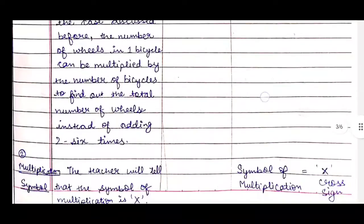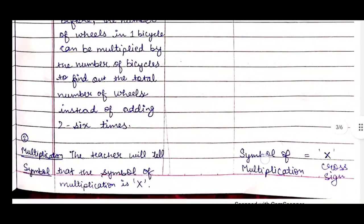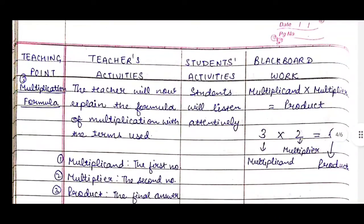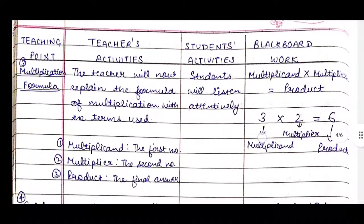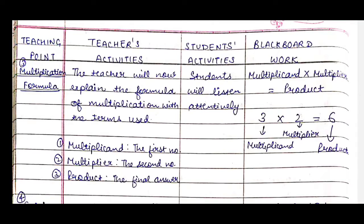The next teaching point is the multiplication symbol. The teacher will tell students that the symbol of multiplication is the cross (×) and mention it on the board. After that, the third teaching point is the multiplication formula. The teacher will explain the formula with the terms used. We will write on the blackboard: Multiplicand × Multiplier = Product. For example, 3 × 2 = 6, where 3 is the multiplicand, 2 is the multiplier, and 6 is the product.